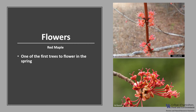Red maple is one of the first trees to flower in the spring, typically several weeks before the leaves emerge. This species is polygamodioecious, which means some trees are entirely male producing no seed, some trees are entirely female, and some trees are monoecious, which means bearing both male and female flowers.